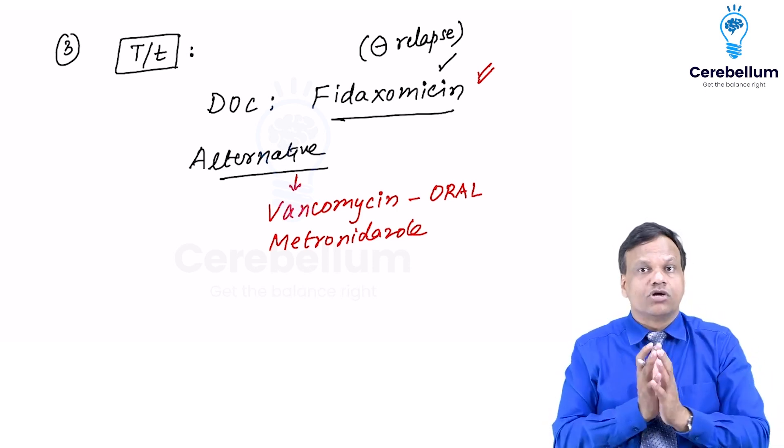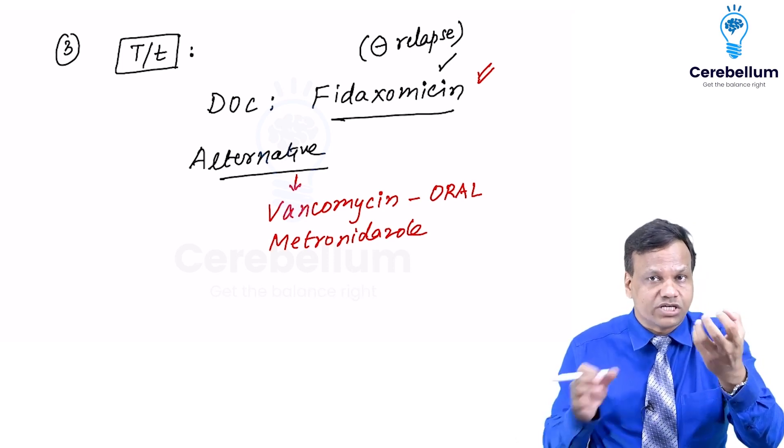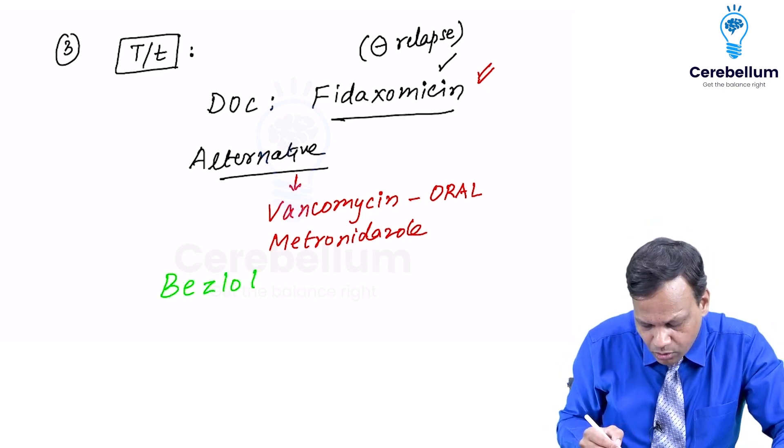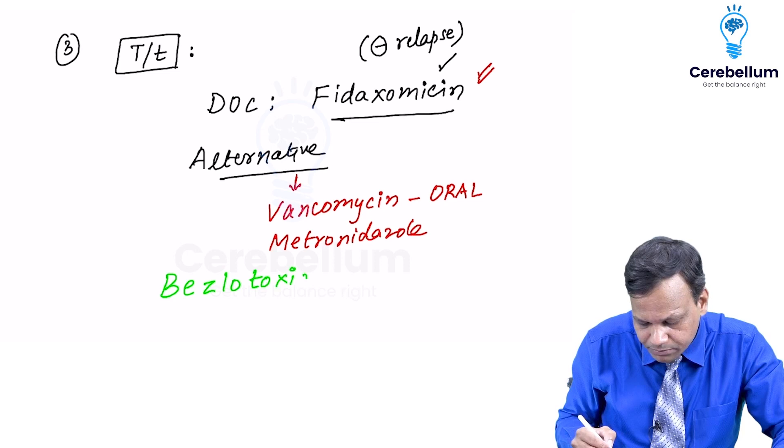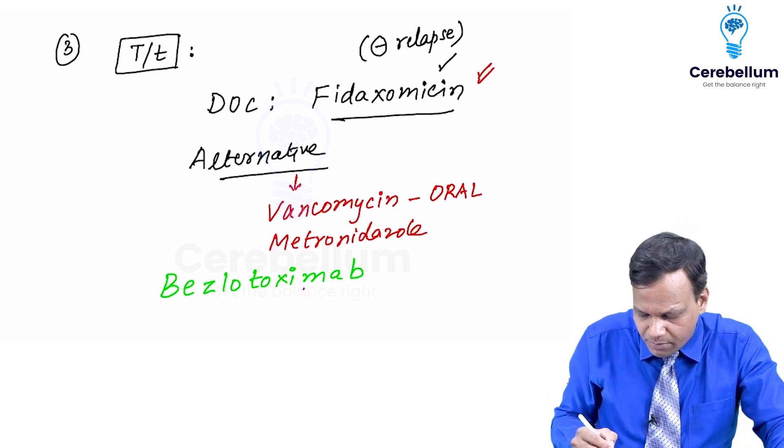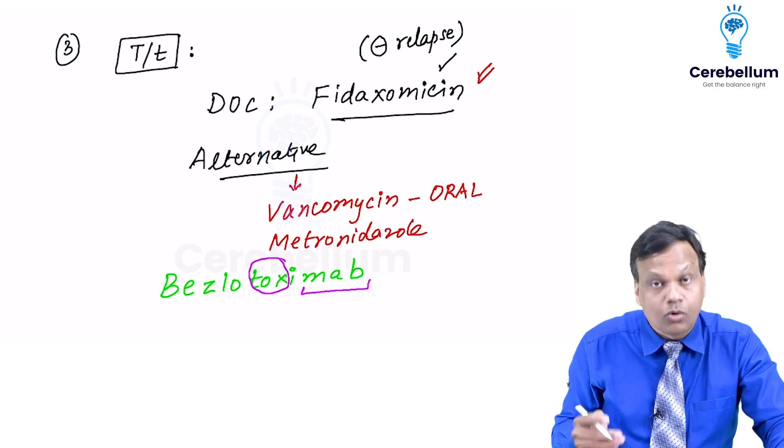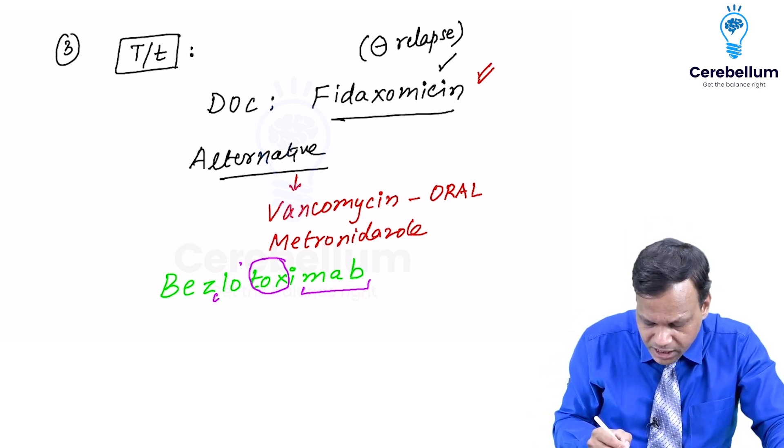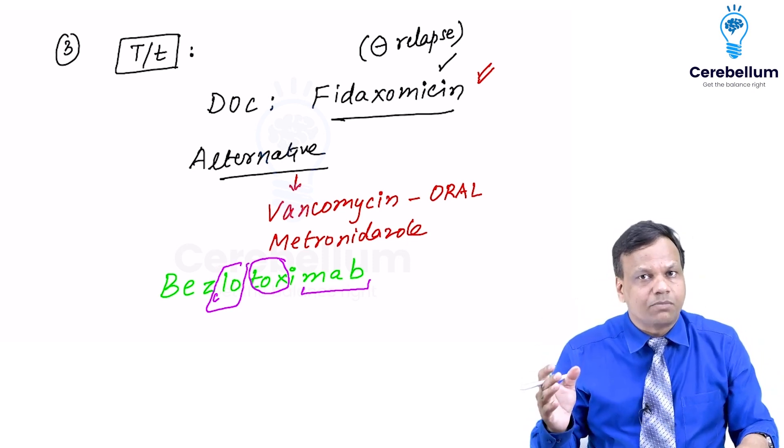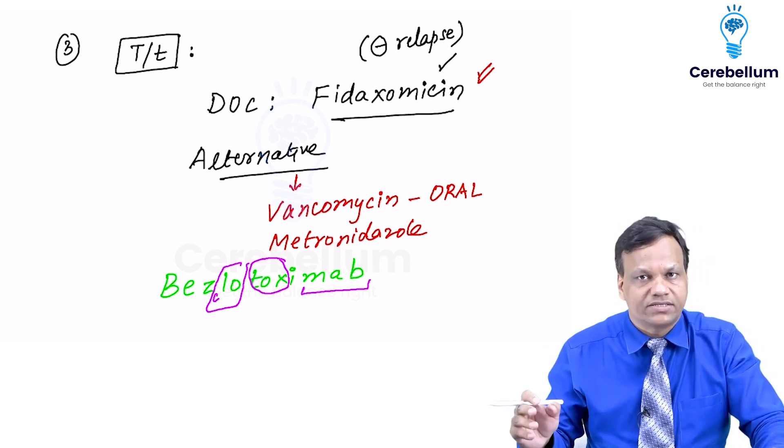And one last thing we have also developed a monoclonal antibody against the clostridium toxin. Clostridium toxin which is causing all the problems and that monoclonal antibody is known as bezlotoxumab. What is bezlotoxumab? You can remember it is a monoclonal antibody against the toxin. Whose toxin? If we write a small c here it will become clostridium toxin. So bezlotoxumab is a monoclonal antibody against clostridium toxin. It can be used for treatment of pseudomembranous colitis.